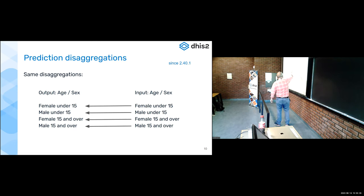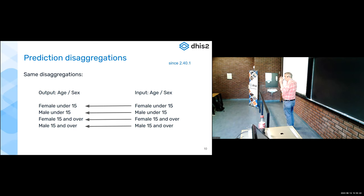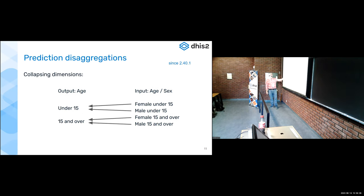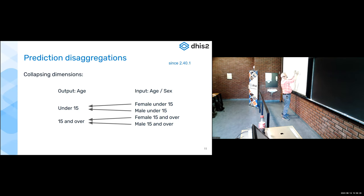If your input is disaggregated by age and sex, the predictor will say we're going to output for female under 15 — choose all input combinations that have female under 15, put it into that value — then for male under 15, and so on. If your output is only disaggregated by age, you can collapse dimensions: anything with under 15 goes into under 15, anything with 15 and over goes into the 15 and over output.